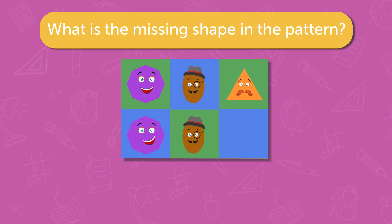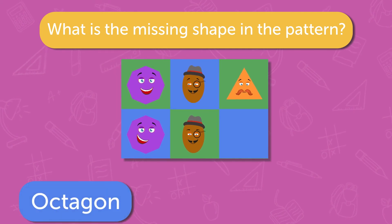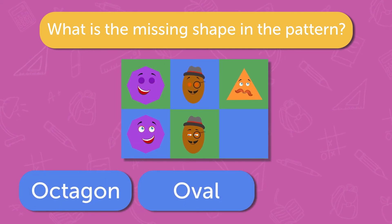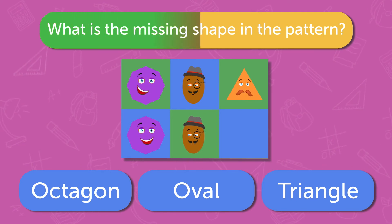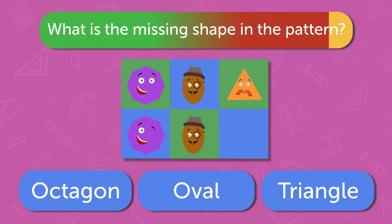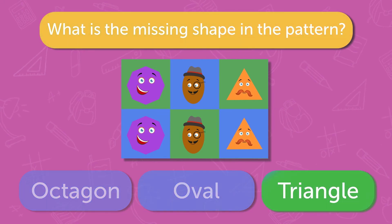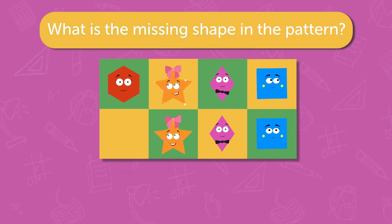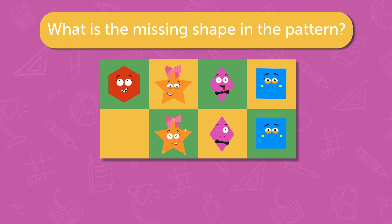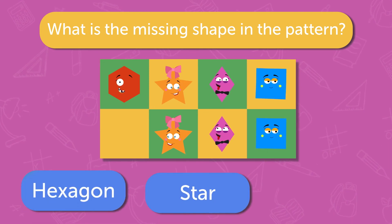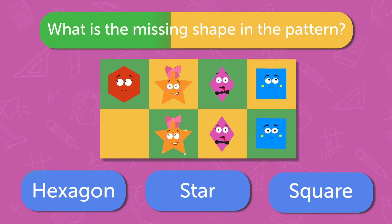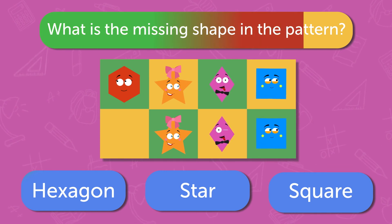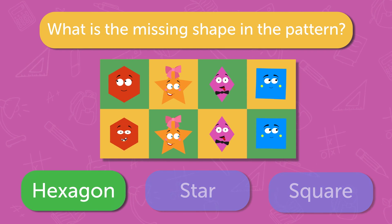What is the missing shape in the pattern? Octagon, Oval, Triangle. Triangle. What is the missing shape in the pattern? Hexagon, Star, Square. Hexagon.